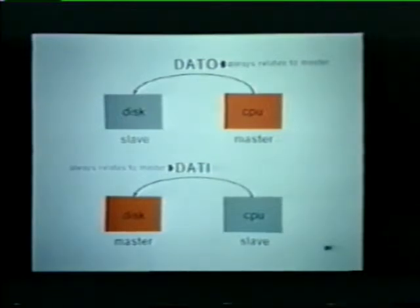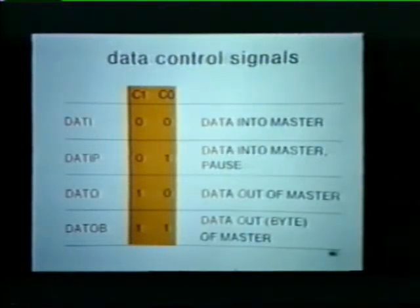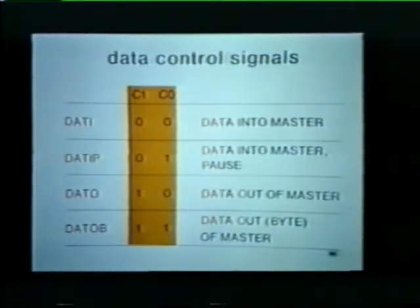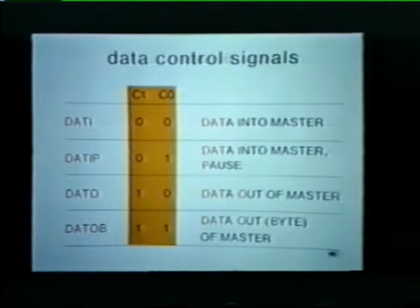Now that you understand the four types of data transactions, let's see how they're selected. Remember the control lines on the Unibus? Two of them are labeled C1 and C0. The master uses these two control lines to select one of the four possible data transactions. If the master places a zero on both lines, a Data I is selected. A zero and a one selects a Data IP. A one and a zero selects a Data O. And lastly, two ones select the Data OB.